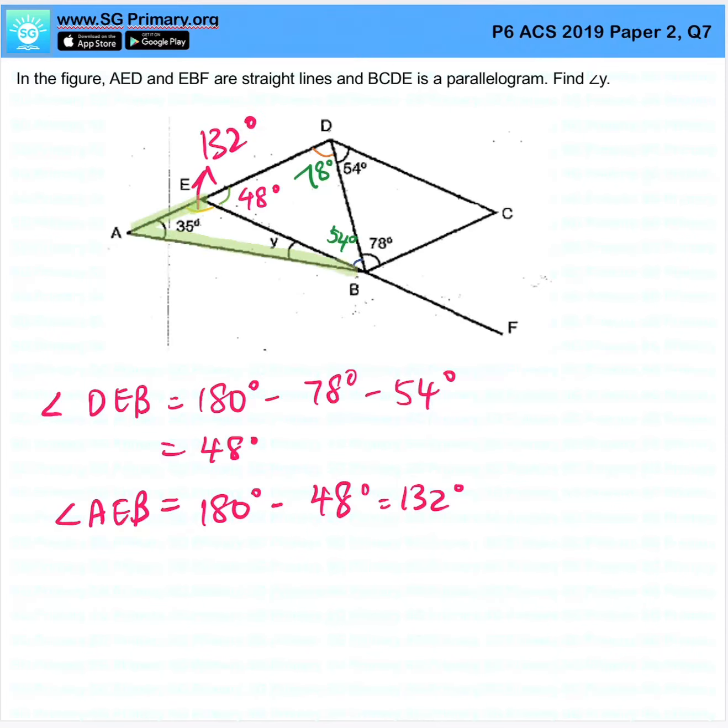Angle Y belongs to this triangle, so we can therefore now find angle Y. 180 minus 132 minus 35 will give us 13 degrees.